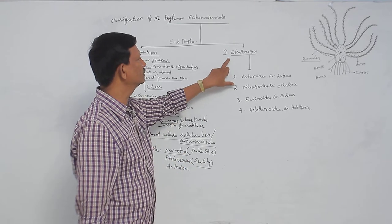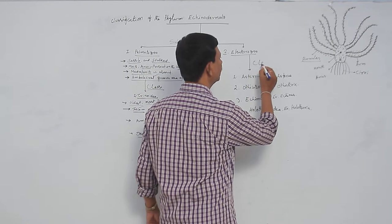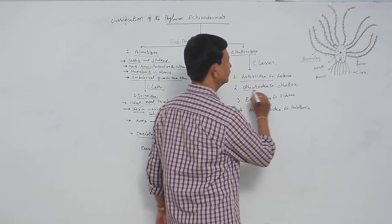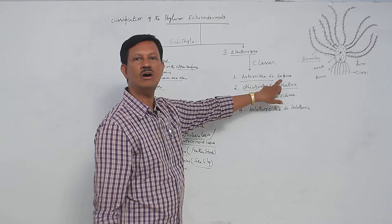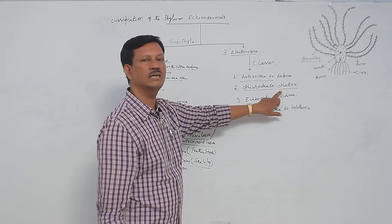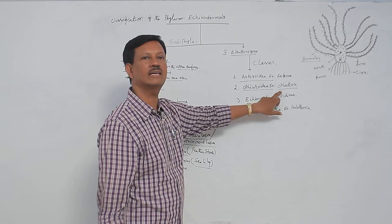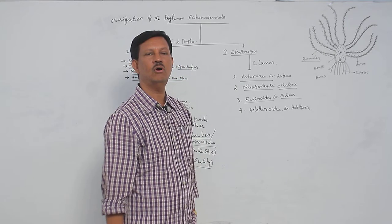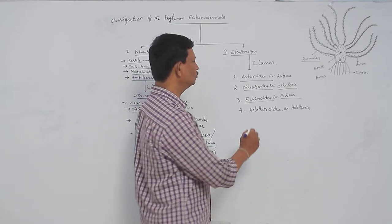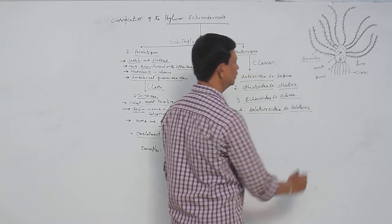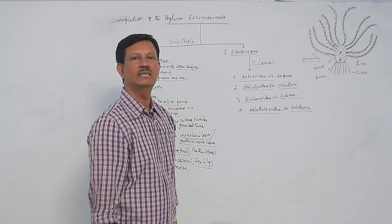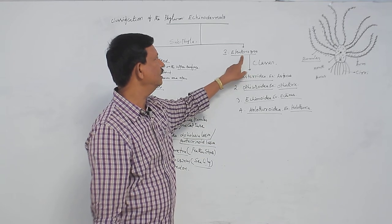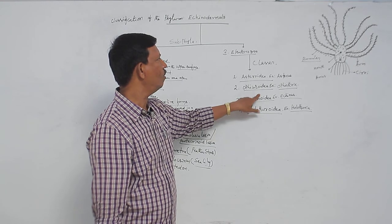The subphylum Eleutherozoa is divided into four classes: Asteroidea (example: Asterias), known as starfish; Ophiuroidea (example: Ophiothrix), known as serpent tails or brittle stars whose arms resemble a snake's tail; Echinoidea (example: Echinus), which are round with no arms and commonly known as sea urchins or sea dollars; and Holothuroidea (example: Holothuria), whose elongated body resembles a cucumber — hence they are known as sea cucumbers. We will now discuss the main characters of each of these classes.